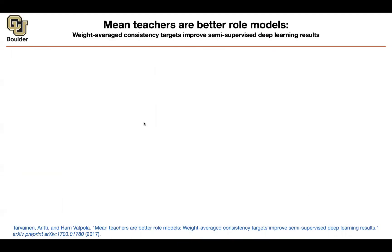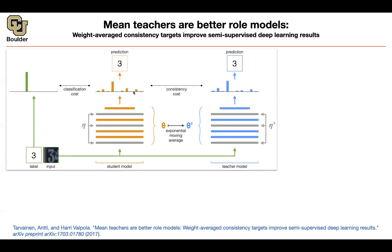With that, we can continue — mean teachers are better role models. That's a nice title, but behind the scene, the idea is not that complex. You have some labeled data and some unlabeled data. What you are trying to do is make some predictions on your unlabeled data and use another model to make predictions again on your unlabeled data — you want these two models to give you the same predictions. That's the idea that's going to help you write down the loss function.